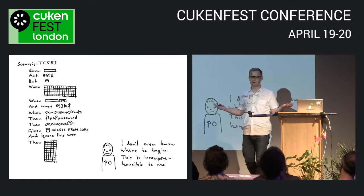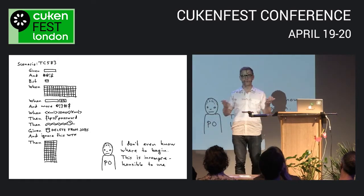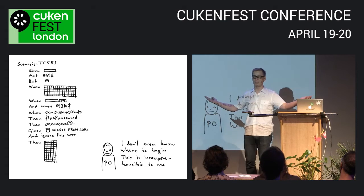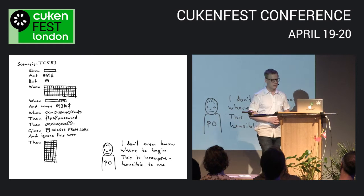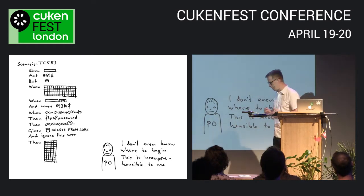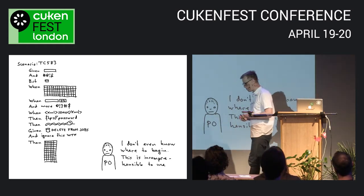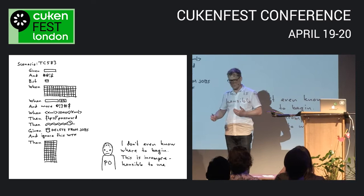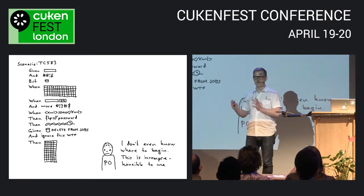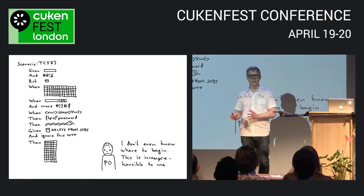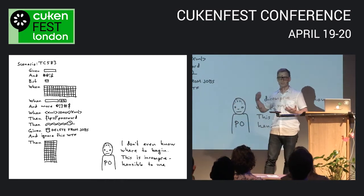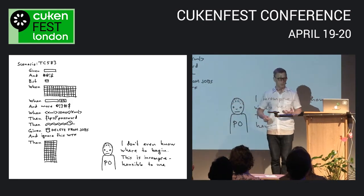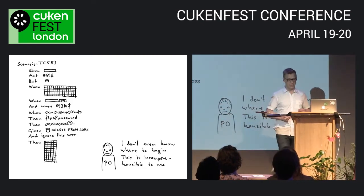And the product owner — who you're supposed to get feedback from — just throws their hands up and says, 'I have no idea what you're talking about in this Gherkin document.' That's why, when you write Gherkin scenarios as an afterthought after the software's been written, basically just reflecting what the user interface does, that's when you end up in this kind of situation. Example mapping can help with that.